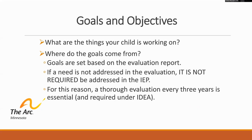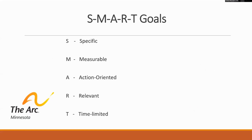The goals in the IEP are based on what the child needs. Where do the goals come from? Goals are set based on the evaluation report. If a need is not addressed in the evaluation, it is not required to be addressed in the IEP — so a thorough evaluation every three years is essential. These goals need to be SMART goals: Specific — what exactly are you trying to achieve? Measurable — how will you know when you've achieved it? Action-oriented or attainable — is it something you have control over? Relevant — how is it applicable? And time-limited — when do you want to achieve your goal? In the IEP, we aim for one year but the maximum is three years.